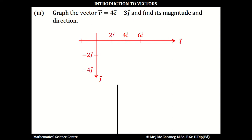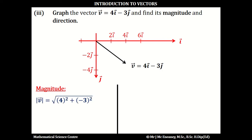In part 3, if we want to graph the vector v, which is 4i minus 3j, so we go across to 4 and then down to minus 3. So v is 4i minus 3j. To get the magnitude using Pythagoras' theorem, the magnitude of v is going to be the square root of 4 squared plus minus 3 squared. This is the square root of 16 plus 9, which is the square root of 25, and this works out as 5.